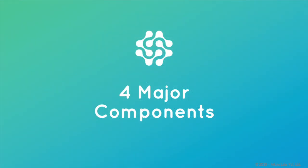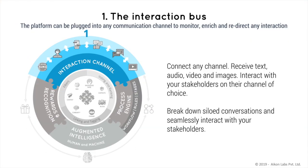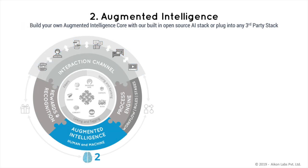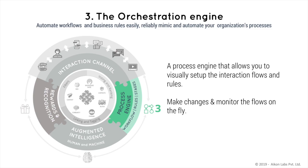The platform has four major components: a bus that can manage high volumes of interactions in various forms; the augmented intelligence component that uses artificial intelligence to create an enterprise intelligence base; and an orchestration engine to manage the flows and the rules that govern it.